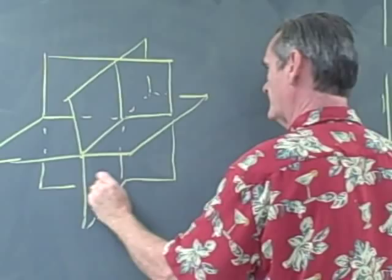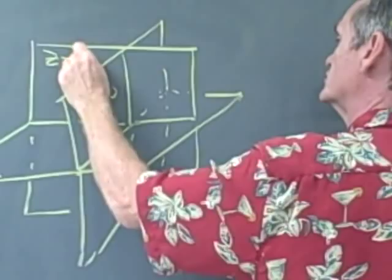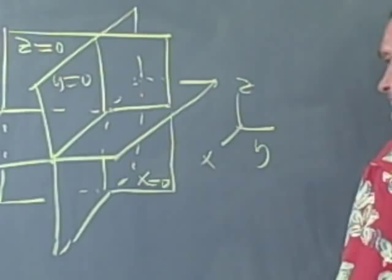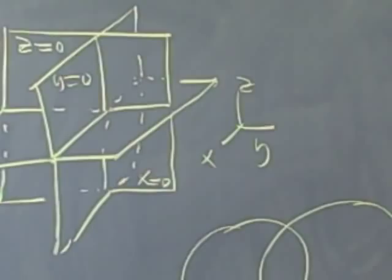And let's label those: this is the plane x equals zero, this is the plane y equals zero, and this is the plane z equals zero. I'm using the standard coordinate system. And the boundary of those three planes, or rather those three discs, would be corresponding to the Borromean rings.